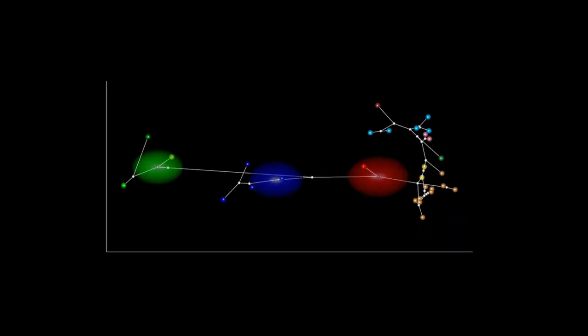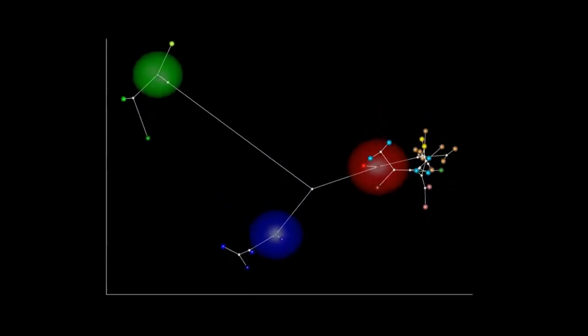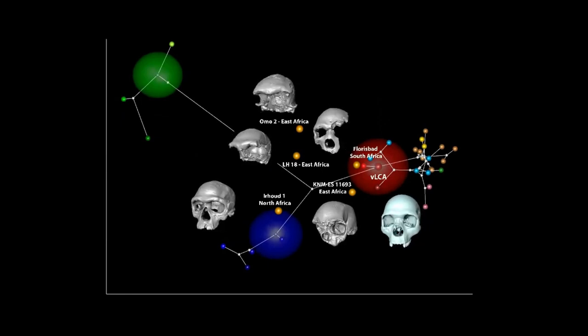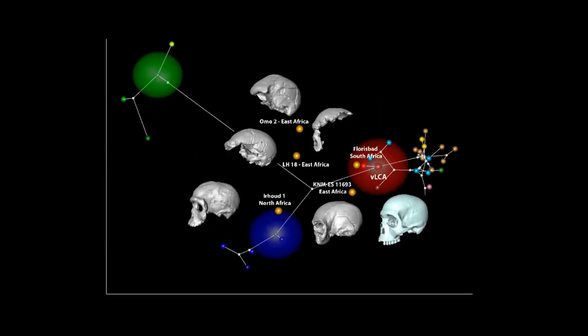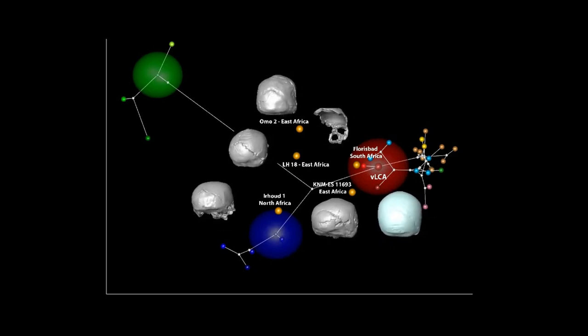The true function of the occipital bone has yet to be determined. Some investigations, however, have discovered probable evolutionary purposes. In one study, the occipital bone was linked to visual brain expansion, thought to be an adaptation to lower light levels observed in Europe's higher latitudes.